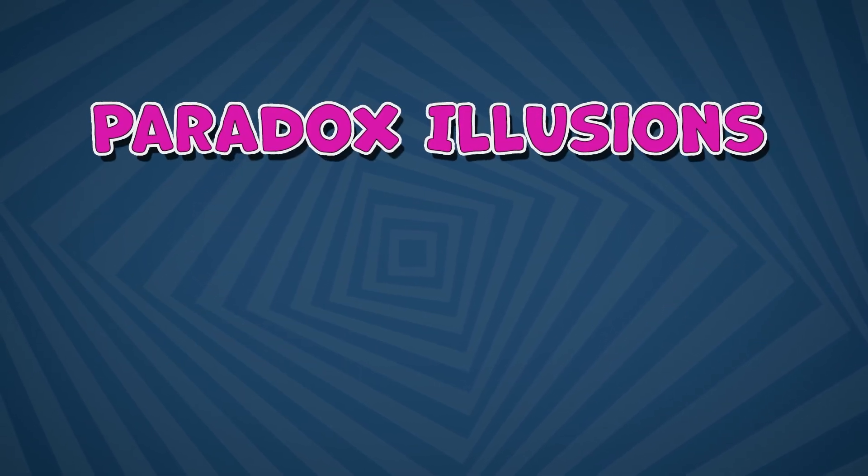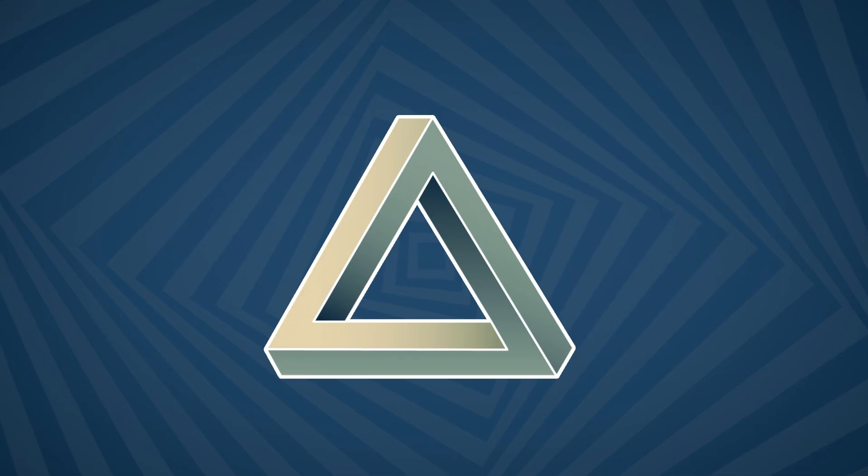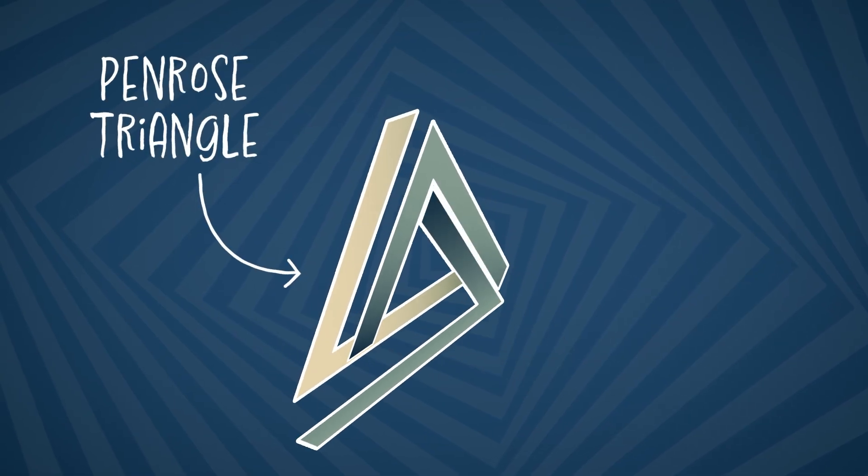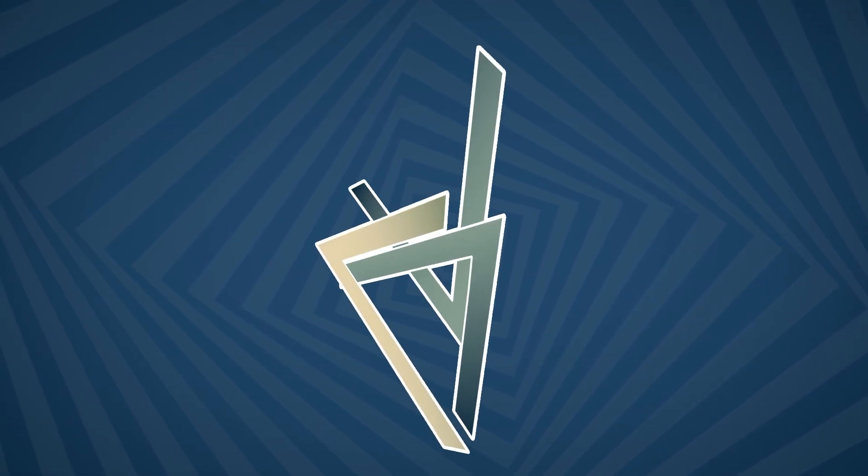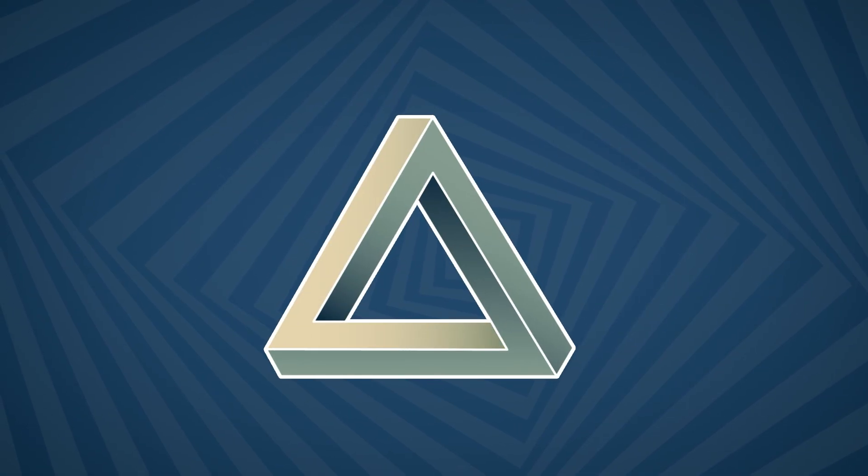Paradox illusions. These are the really crazy ones that can't exist in 3D space, like the Penrose Triangle. Our brain tries to interpret them as 3D, but they're actually impossible.